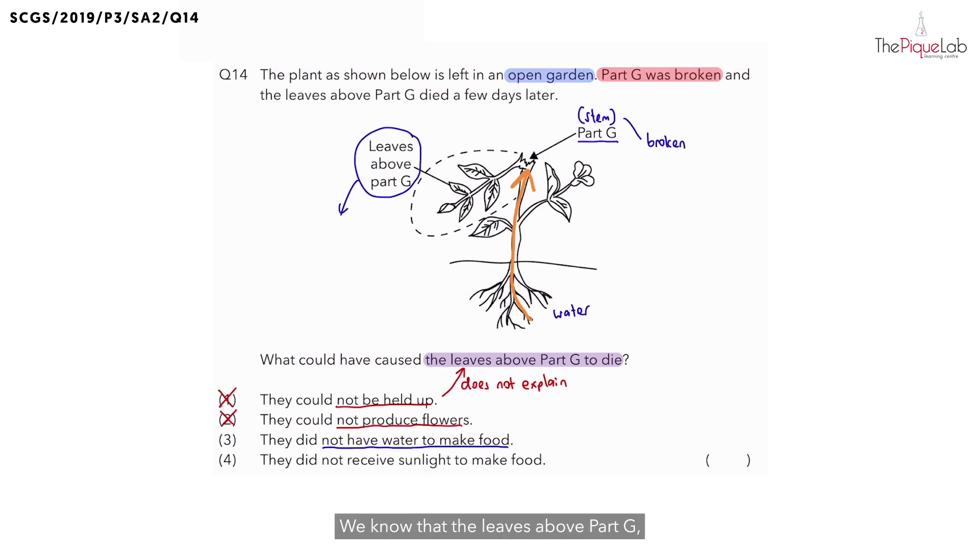We know that the leaves above part G, they cannot receive water to make food for the plant. And if the leaves above part G cannot make food for the plant, what do you think will happen to the leaves above part G? Are they able to survive? No.